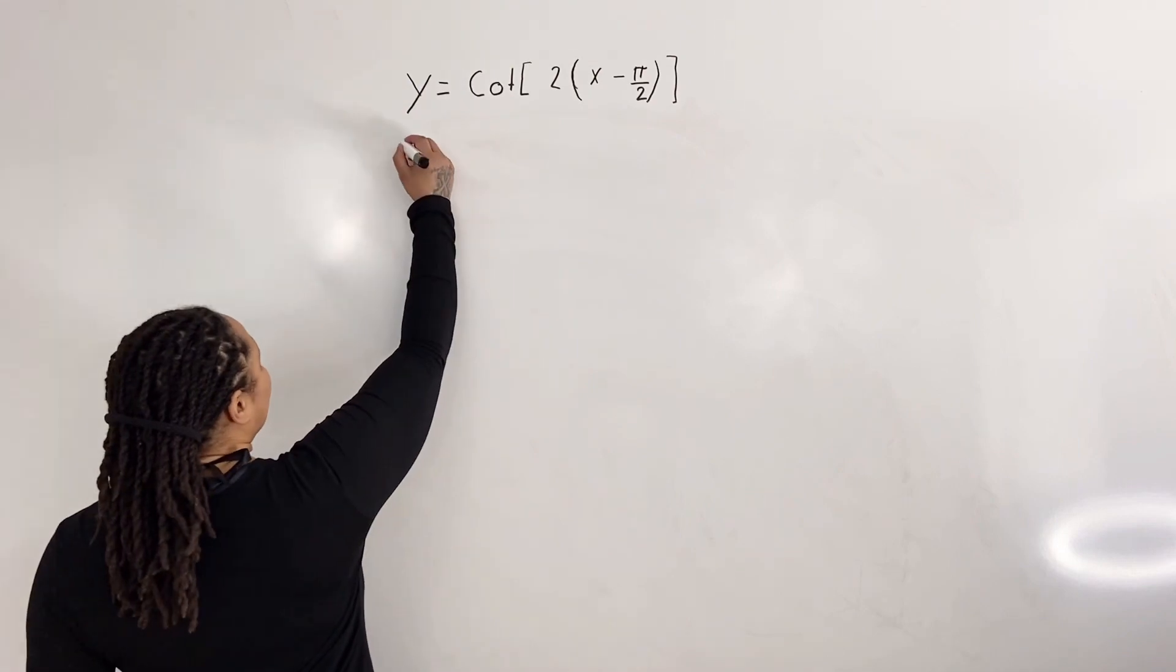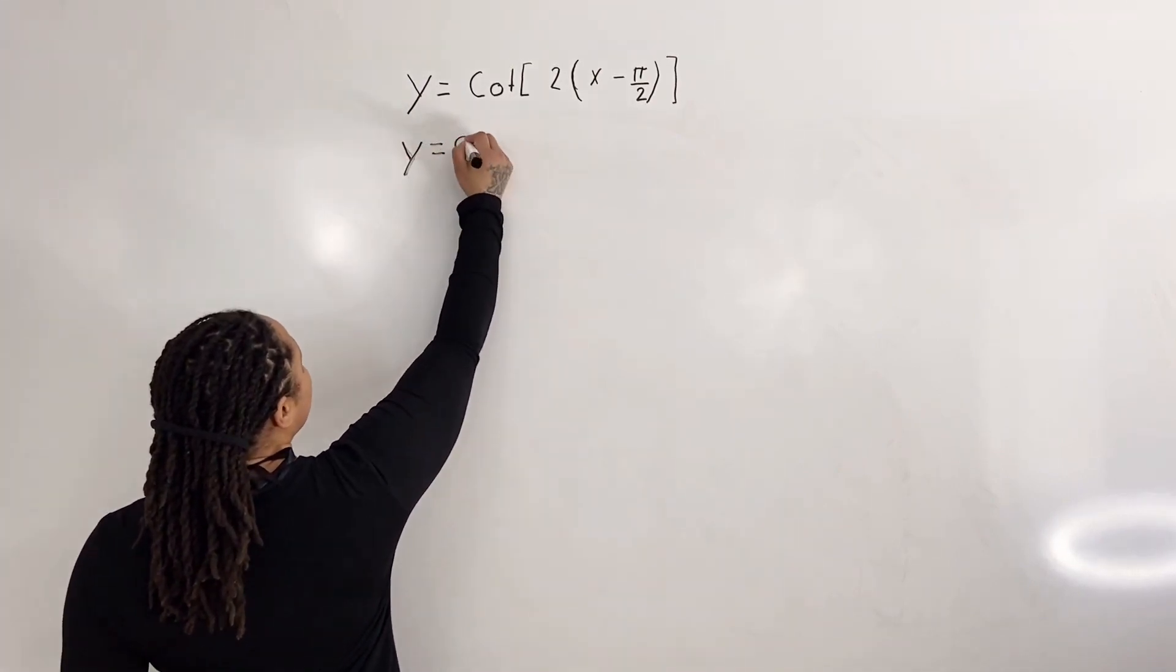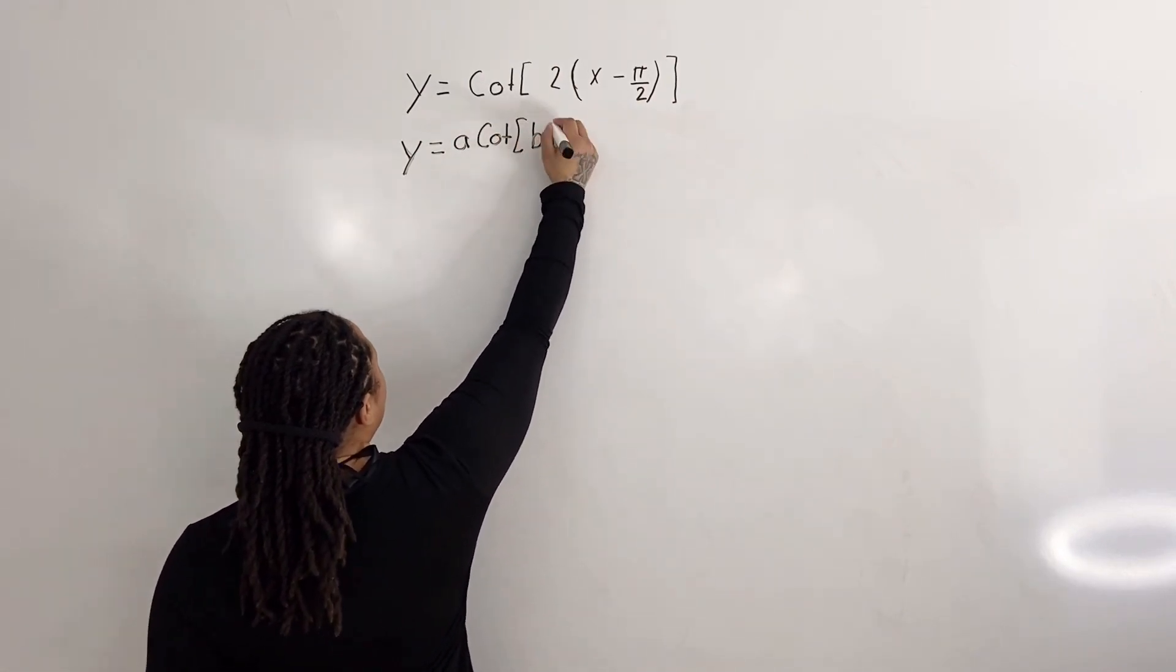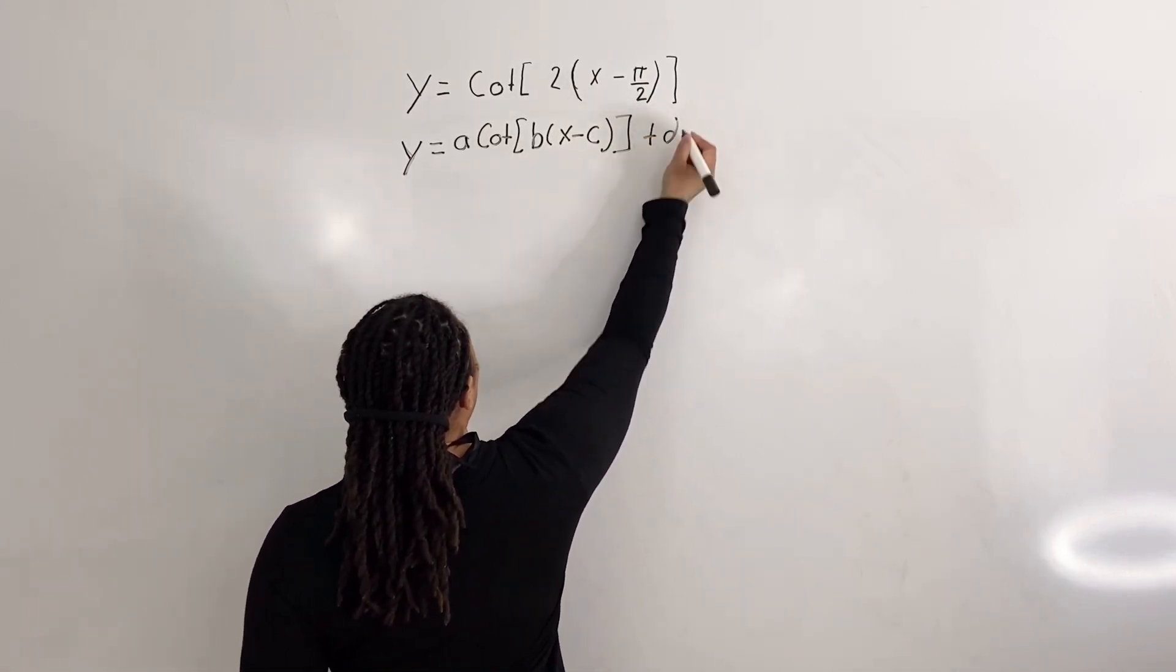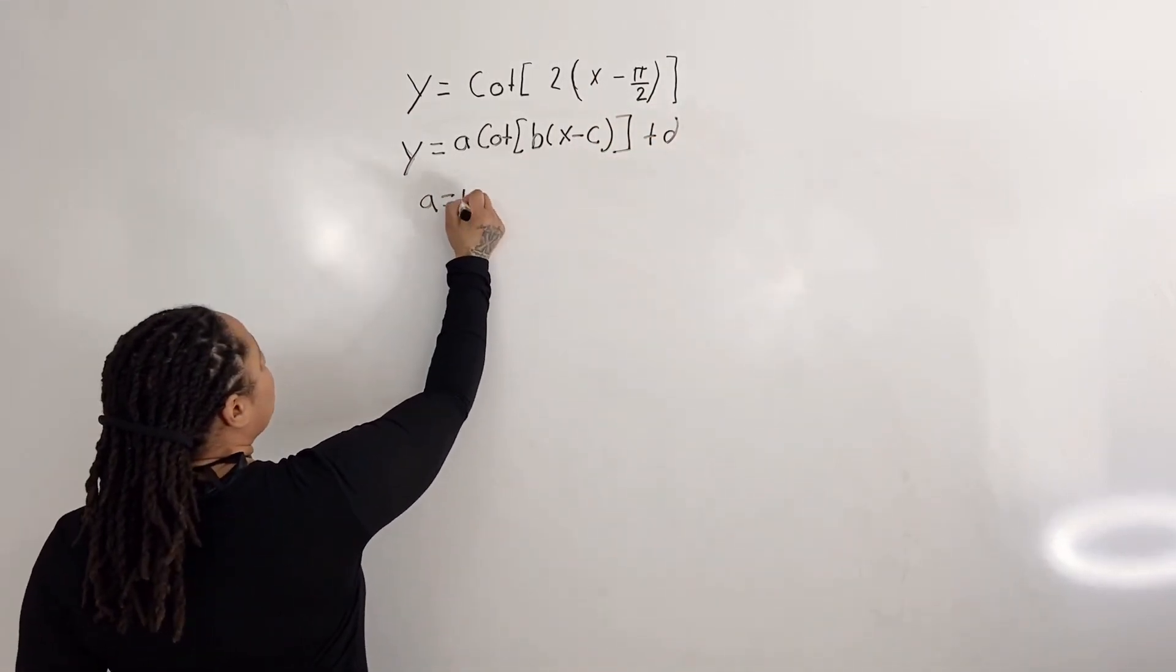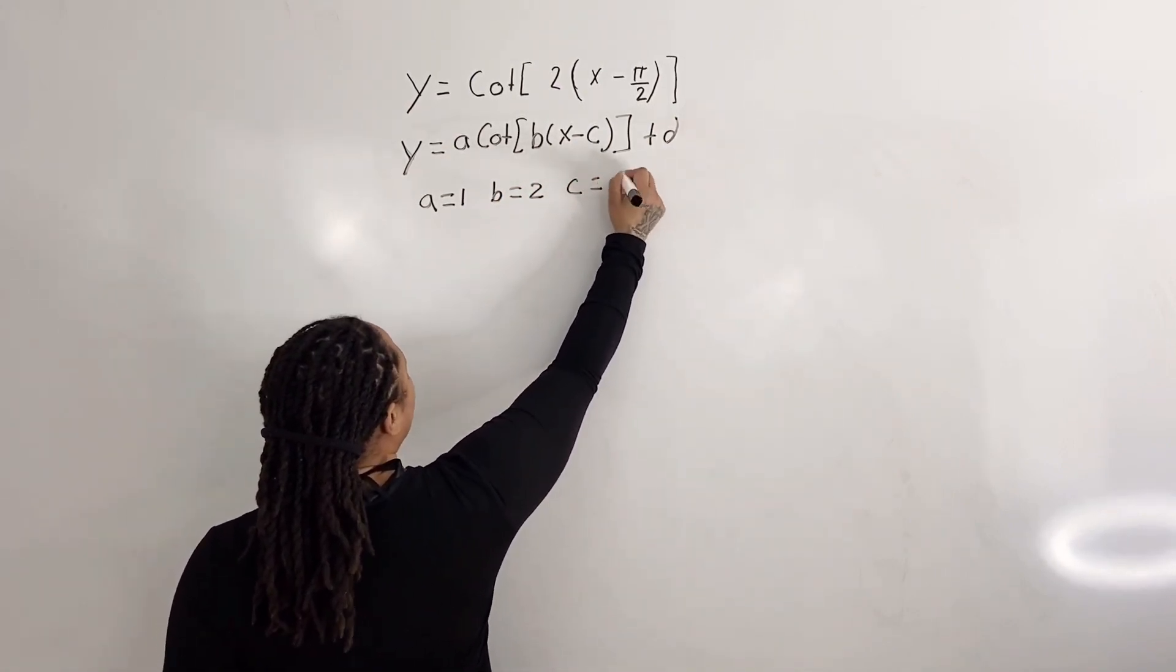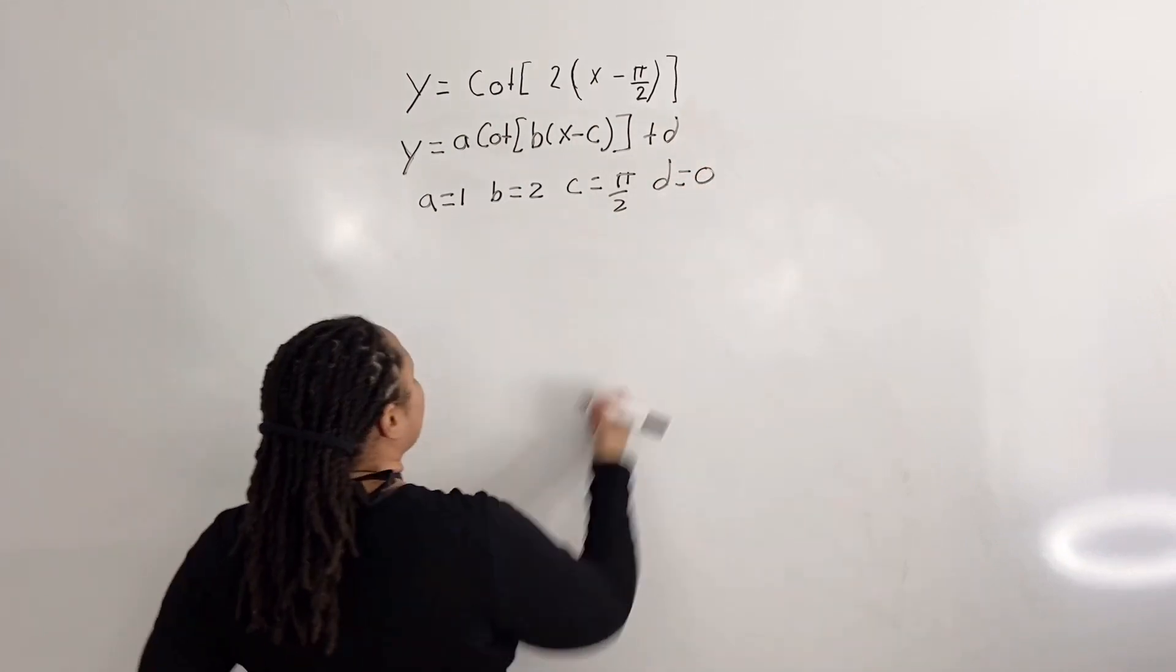So the first thing we're going to do is recognize that we have the form y equals a cotangent of bx minus c plus d, where a is equal to 1, b is equal to 2, c is equal to pi over 2, and d is equal to 0.